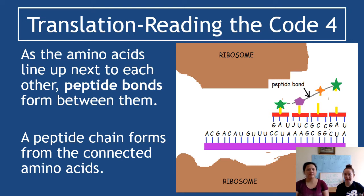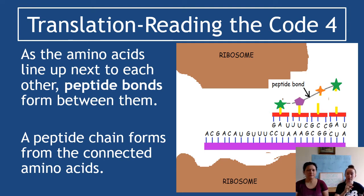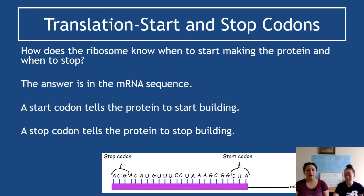As amino acids line up, a peptide bond forms between them, bringing us closer to forming a protein. Once each amino acid is in place, a peptide bond forms and creates what's called a peptide chain — essentially our protein, with just one more step before we actually call it a protein. As soon as you've got a chain of amino acids produced by tRNA with peptide bonds forming, you have a peptide chain.